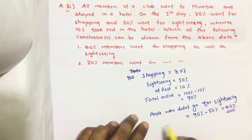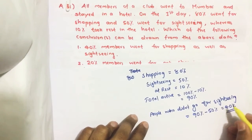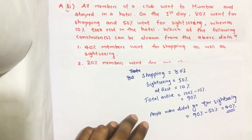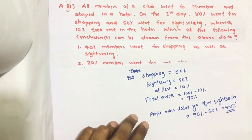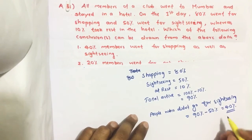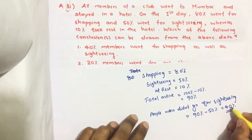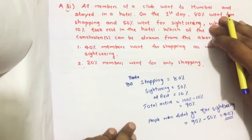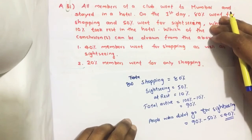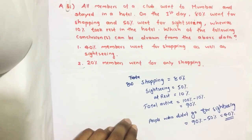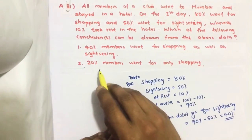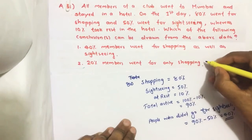If these active 40% people didn't go for sightseeing, then where did they go? They went for shopping. So at least 40% of the people went for only shopping.